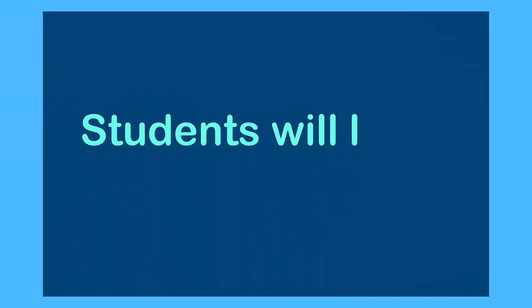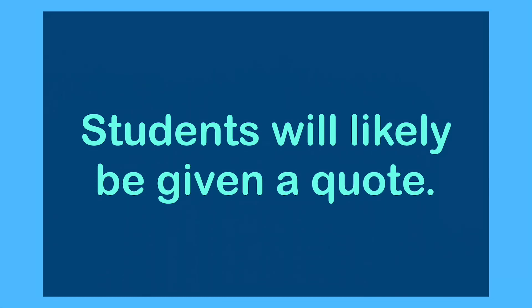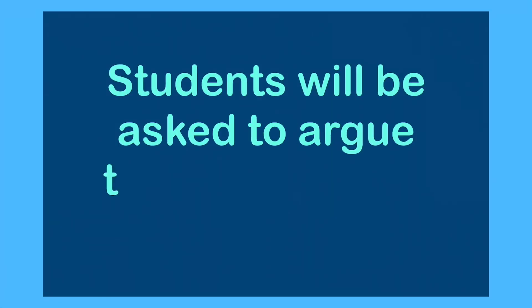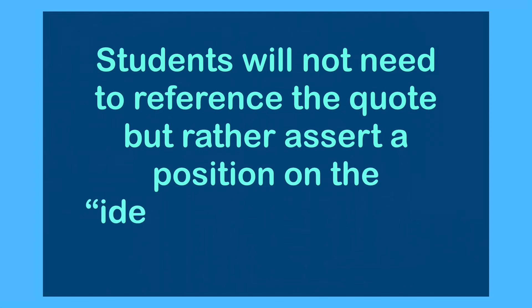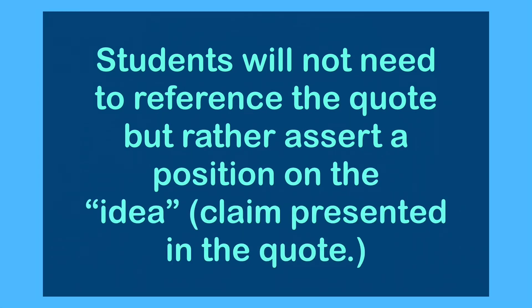For question three, there's going to be a quote, and that quote will give you a general issue that you're going to be writing about. The task portion of the prompt will ask students to assert a position on the author's position, and then paraphrase the quote. Students do not actually need to reference the quote or even reference the person who said it, because the idea is to present your own argument. Definitely do not waste time rewriting the quote — the idea is to put forth your own position.